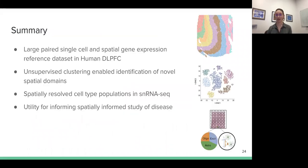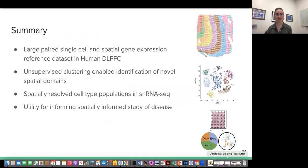So in summary, we have a large paired single cell and spatial gene expression reference data set in the human DLPFC. We use unsupervised clustering, which enabled identification of novel spatial domains in the tissue. And we have spatially resolved cell type populations in the single nucleus RNA-seq with the spatial layers in mind. And we found that we believe that this data set has great utility for informing spatially informed study of disease.